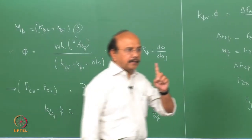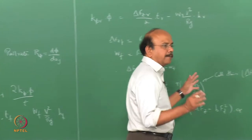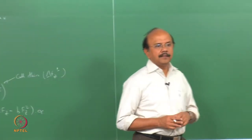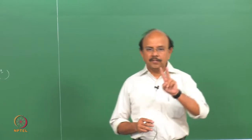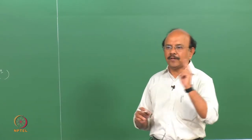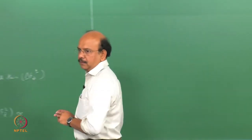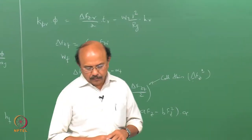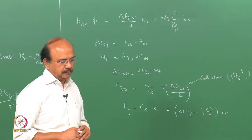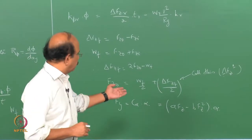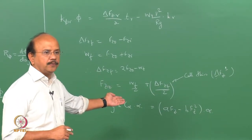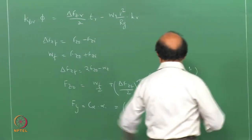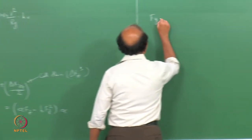Please note that since we collapsed the left and right tyre into one tyre, the C_alpha which we will be using is 2 times the C_alpha of individual tyres. It is 2 times — when you are given a problem, be very careful on that. Now, what I am going to do is to substitute this for whatever is the front tyre contribution.